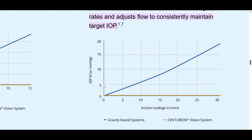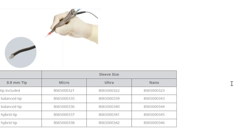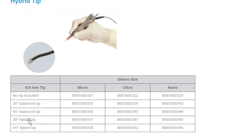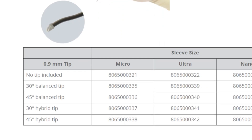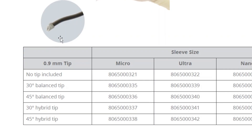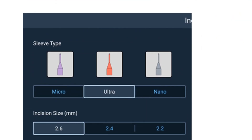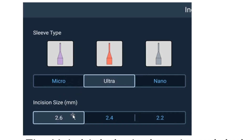For every drop in IOP — say five mmHg — the system increases irrigation pressure accordingly. As for tips, the options from the Centurion remain: the Balance tip at 30 and 45 degrees, plus the Hybrid tip, which has a polymer cap at the distal end to prevent posterior capsule rupture. All are available with the Unity. Sleeves include ultra, nano, and micro options for different incision sizes.